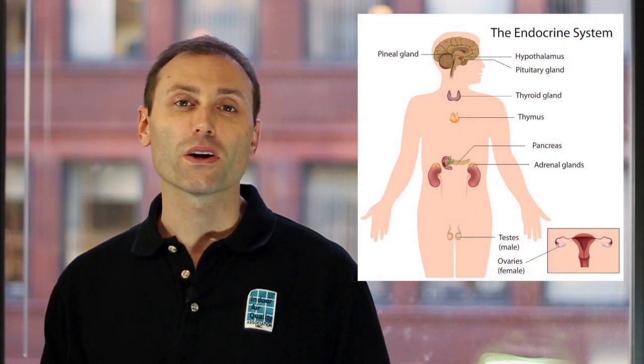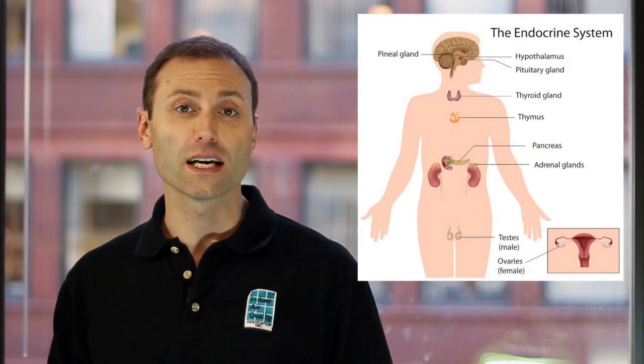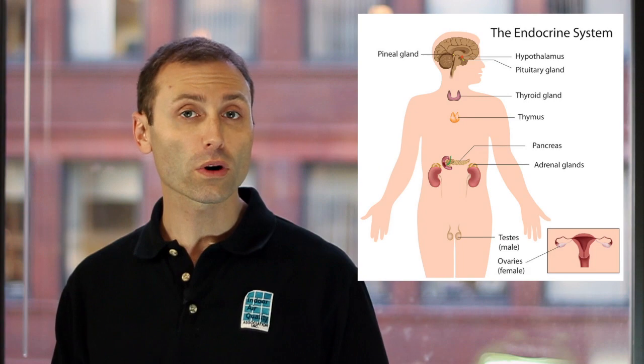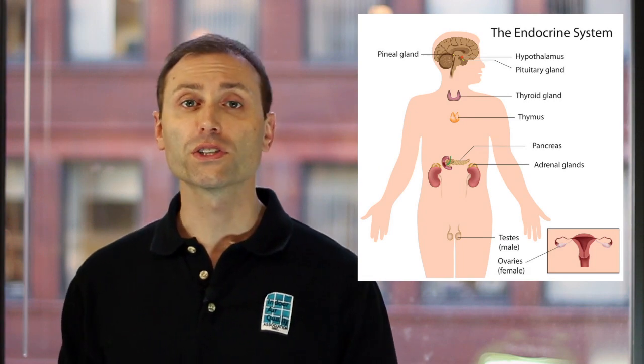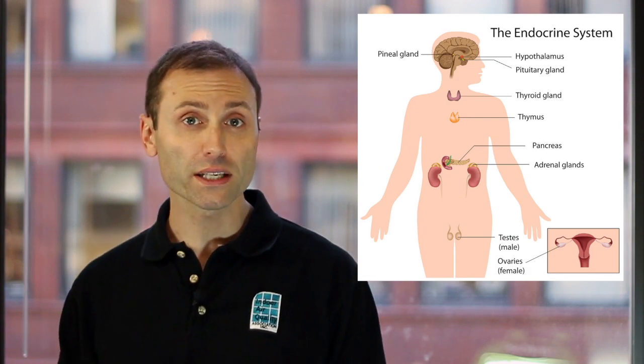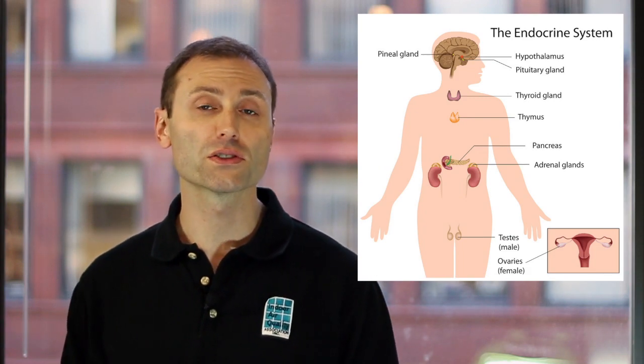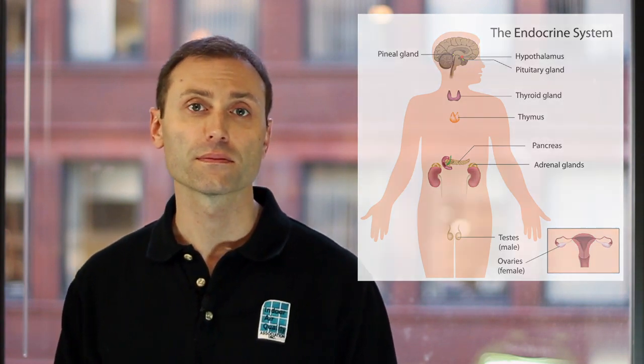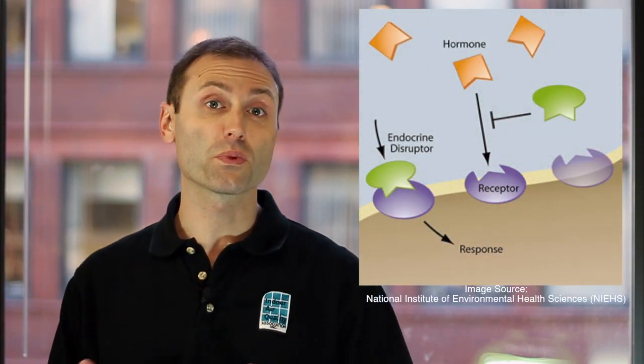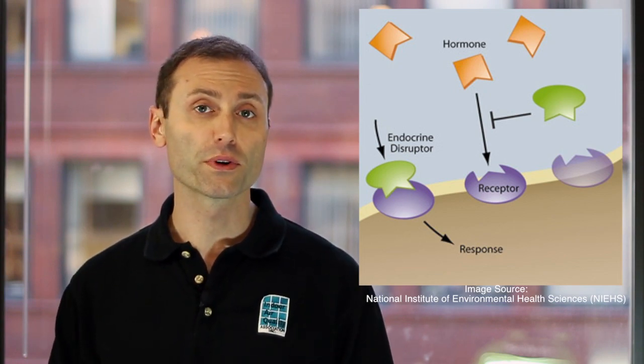Well, it's a collection of glands that release hormones which in turn orchestrate and regulate key functions in your body. There are chemicals that can disrupt the endocrine system which may affect your body including your reproductive system, nervous system and immune system.